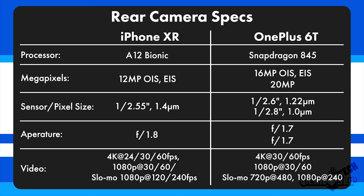The iPhone XR has a 12 megapixel camera sensor with optical and electronic image stabilization. The OnePlus 6T has a 16 megapixel optically and electronically stabilized main camera sensor with a 20 megapixel secondary camera primarily used for measuring depth in portrait mode. When you look at sensor pixel size, the iPhone XR sensor is slightly bigger, and since it's fewer megapixels, the actual pixel size is also slightly larger at 1.4 microns versus 1.22 on the OnePlus 6T.